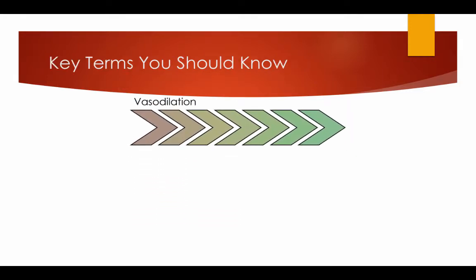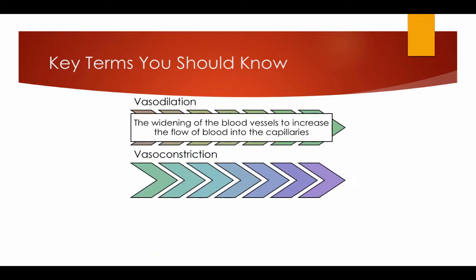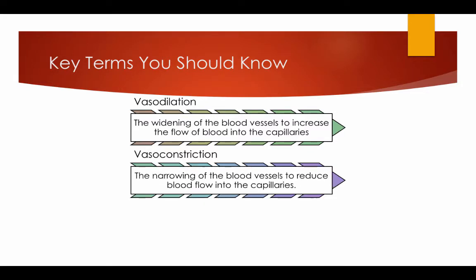Key terms you should know. Vasodilation: the widening of the blood vessels to increase the flow of blood in the capillaries. Vasoconstriction: the narrowing of the blood vessels to reduce the blood flow to the capillaries.